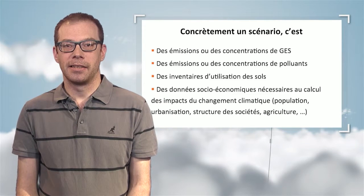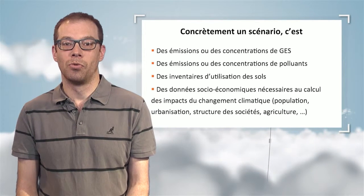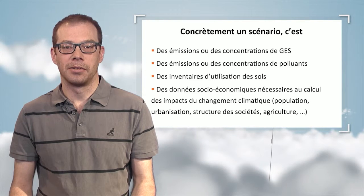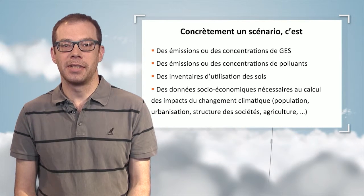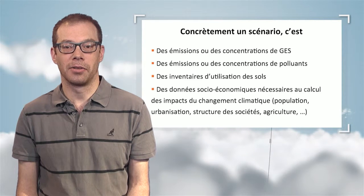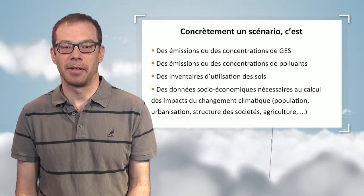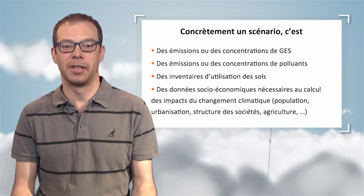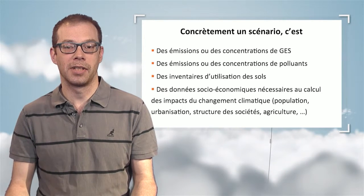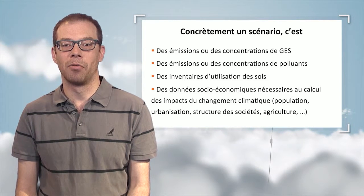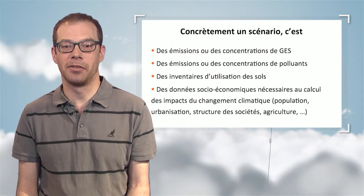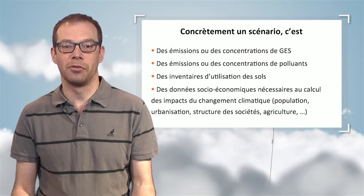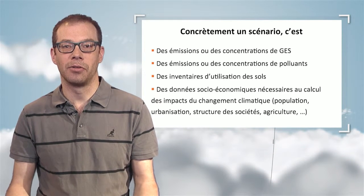In conclusion, a climatic scenario requires good knowledge of greenhouse gas emissions or concentrations, good knowledge of short life cycle pollutant emissions and concentrations, and the way land is used on the continents as a boundary condition. Finally, if we want to translate climatic projections into impact projections for ecosystems and human society, we need to combine the projections with underlying socioeconomic data found in scenarios, such as population, degree of urbanization, society structure, agriculture, industry, and so on.